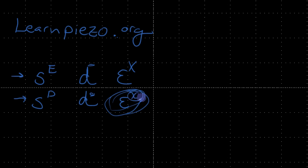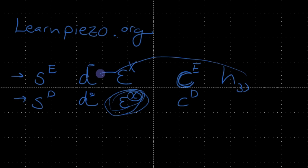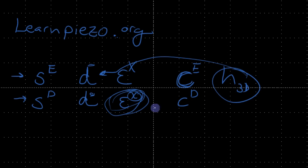We'll get into the exact definitions. We have two other terms: C, which is traditionally defined under open circuit conditions and can also be described under constant electric field, and a variable called H. H is similar to D in that it's defined in a certain way, so we'll take a look at these parameters.